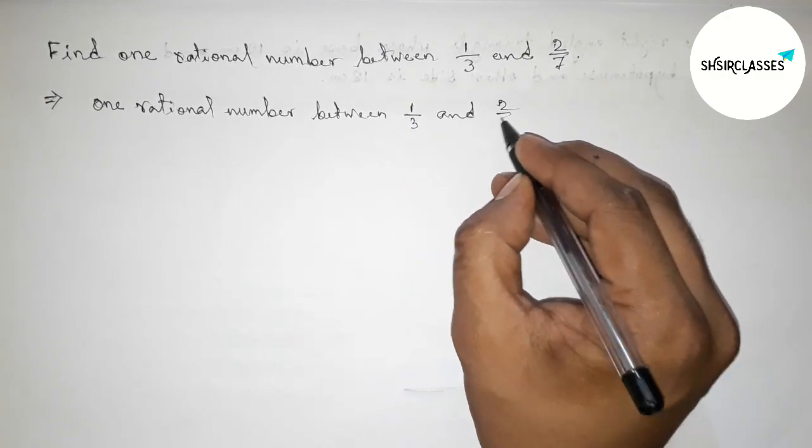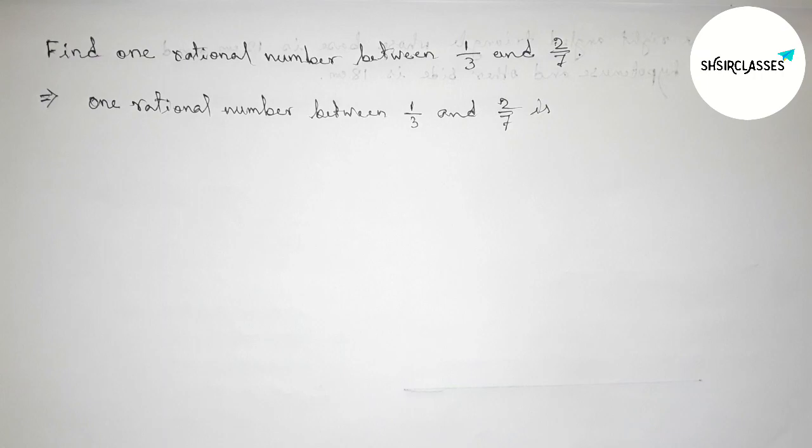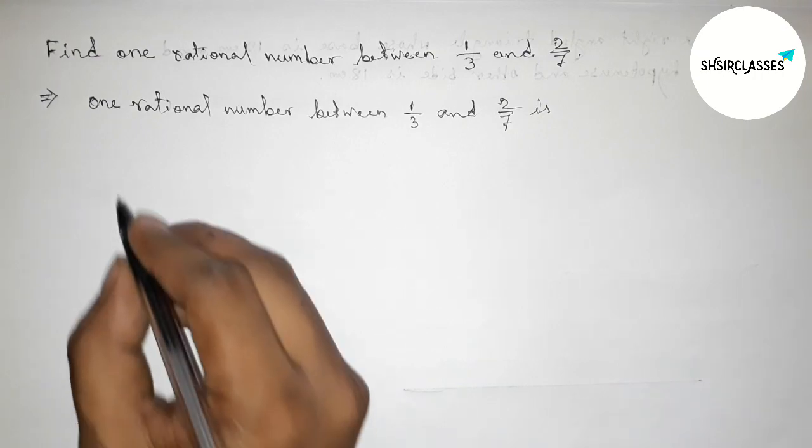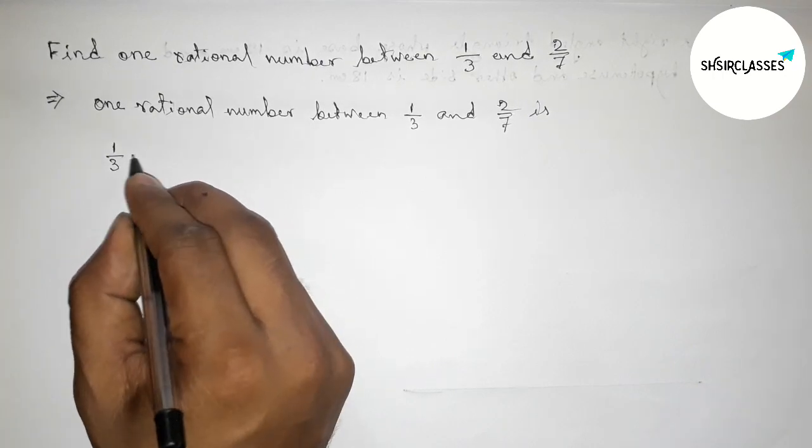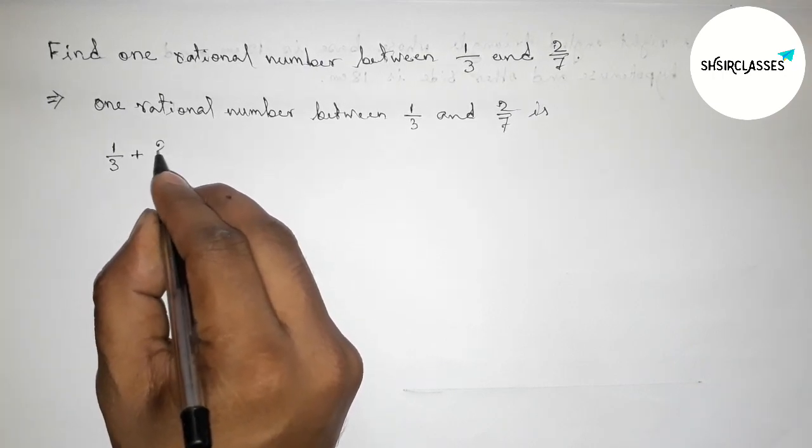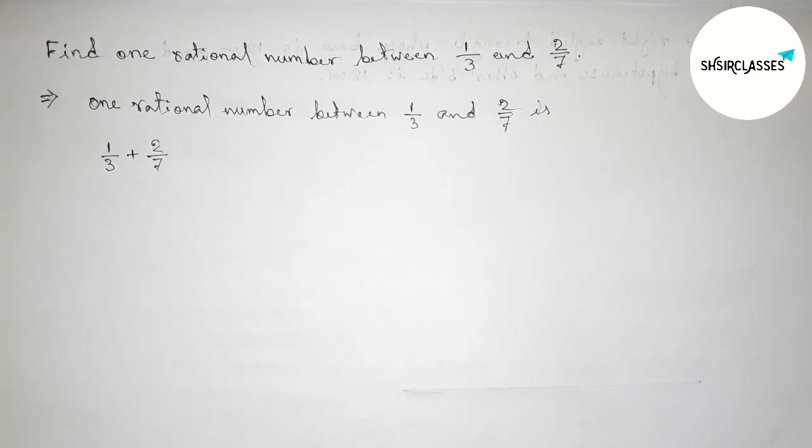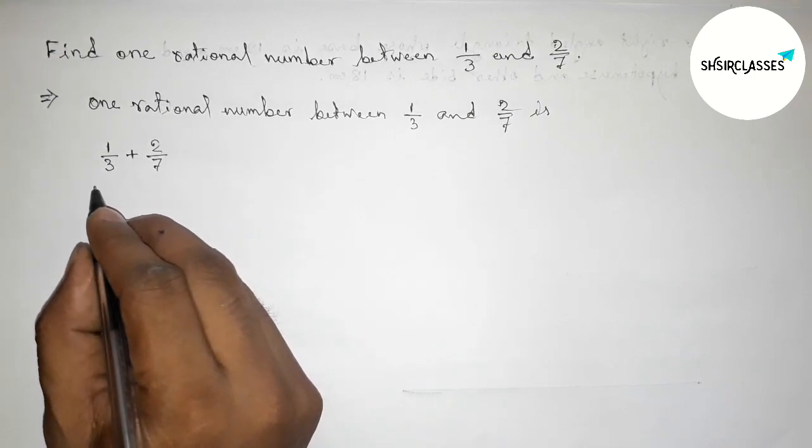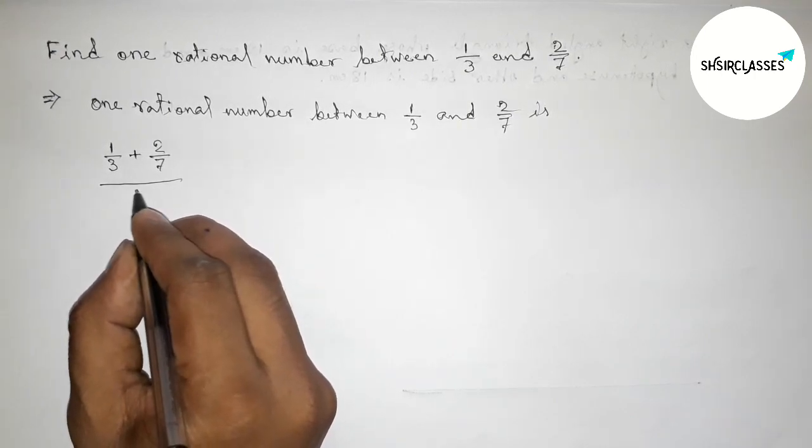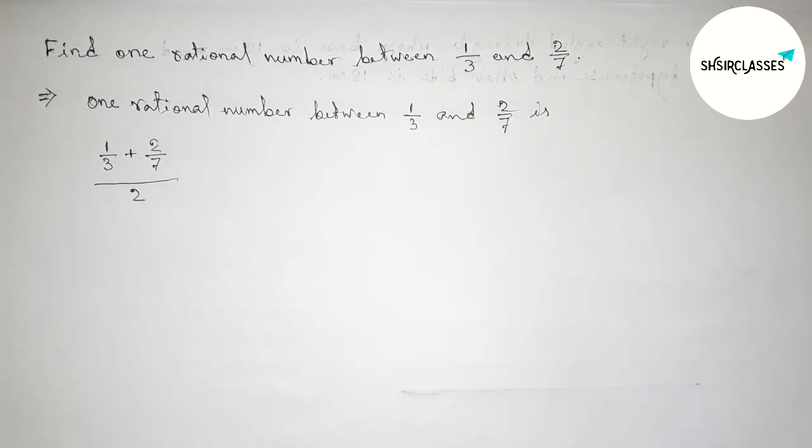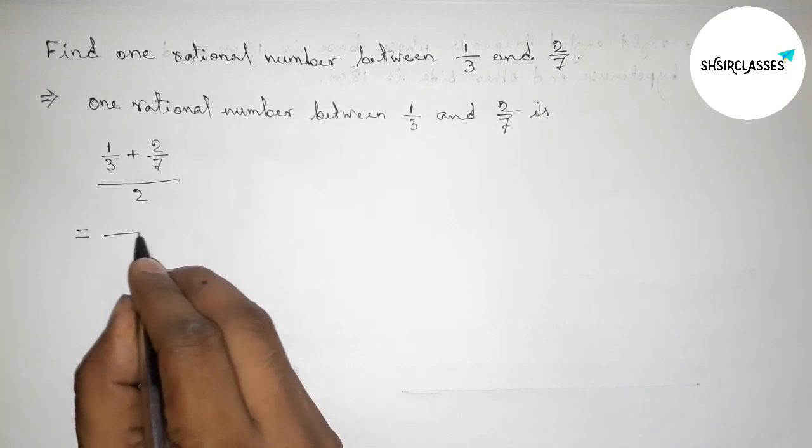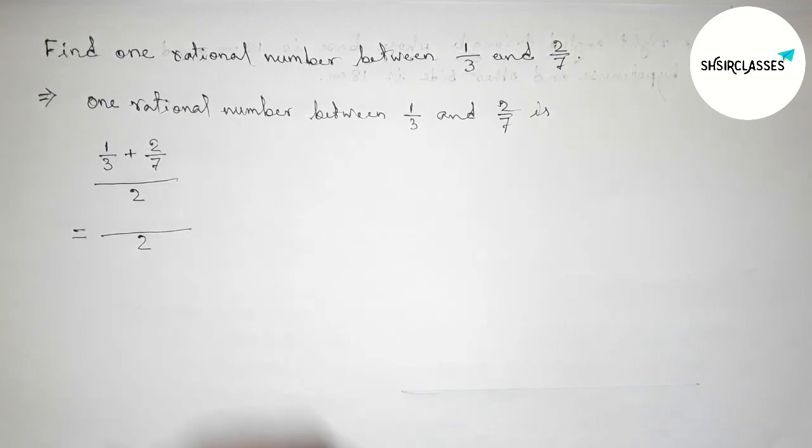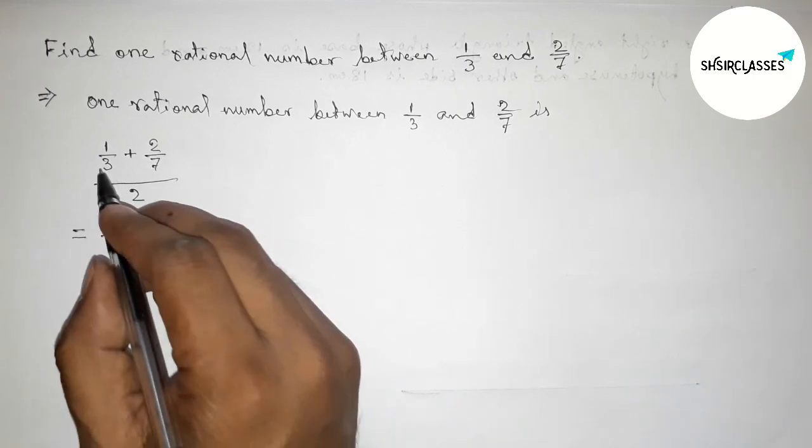So first adding 1/3 plus 2/7, and here the number of given rational numbers is 2, so dividing by 2. This is the mean formula. Now simplifying this, we write 2 in the denominator.